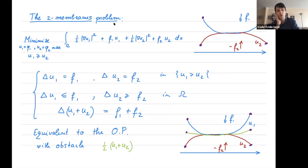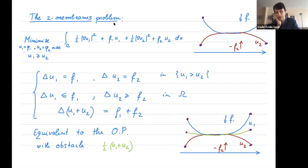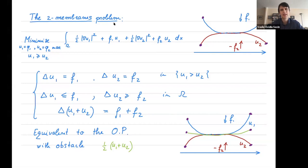Since u1 plus u2 is determined from the boundary data by solving a Laplace equation, the average of u1 and u2 acts as the actual obstacle for the difference. In the coincidence region u1 equals u2, so the Laplace of each equals the average of the forces (f1 plus f2)/2. So the two membranes problem is in some sense equivalent to the obstacle problem, and is uninteresting because you can always reduce it to a fixed obstacle problem.